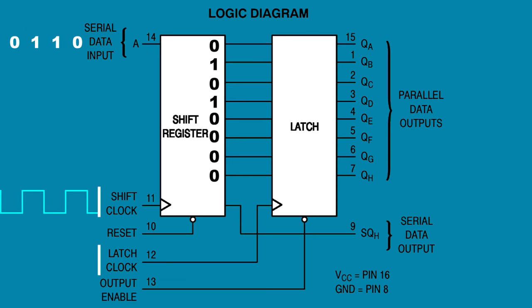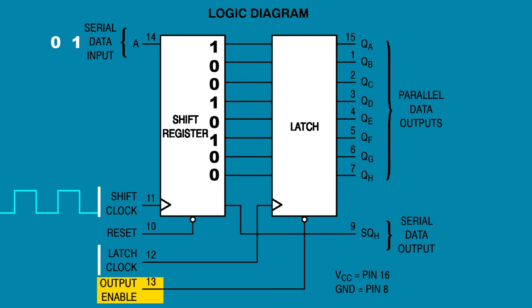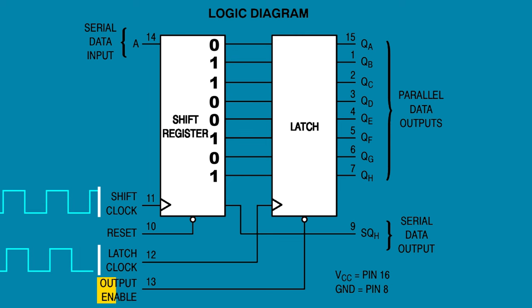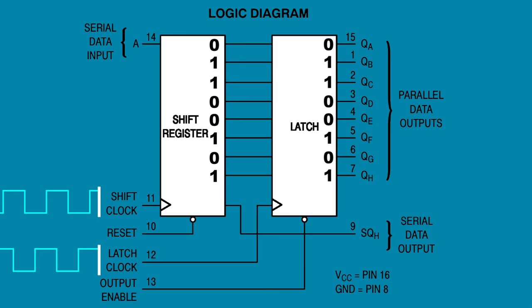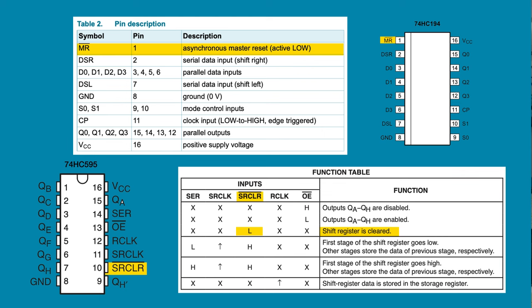The active low output enable is an on-off switch for the outputs — this pin must be held low for any output to be enabled. When the storage register clock pulses, data from the shift register is shifted to the outputs. So the shift register clock is kind of like the clock for the inputs, while the storage register clock is kind of like the clock for the outputs. Shift registers also often have a reset or clear pin that, when active, resets all storage registers to low.